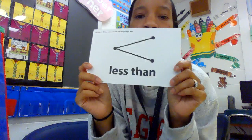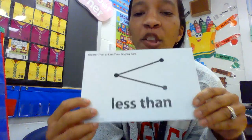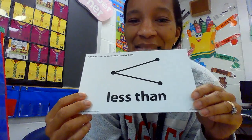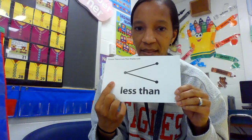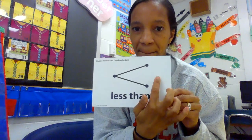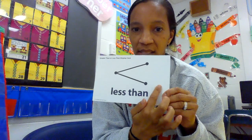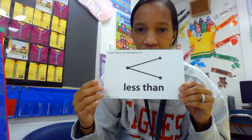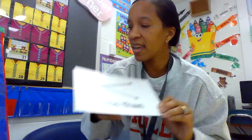Let's make sure you remember what these signs mean. Who remembers what this is? Hopefully you said less than. That means the smaller number would be on this side — the close side — and then the bigger number would be on this side, because that's where the alligator wants to eat. So, less than.